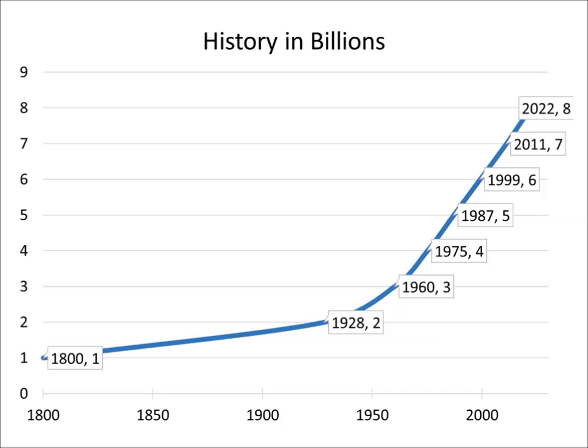In 1800, the world population was roughly 1 billion — nobody knows exactly, but that's a pretty good estimate. It took until 1928 before it reached 2 billion, so it doubled over 128 years. Then it reached 3 billion in 1960, only 32 years later. Then 4 billion in 1975, only 15 years later. And since then it has grown at a rate of about 1 billion every 12 years.